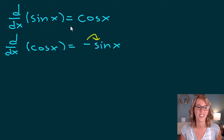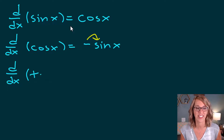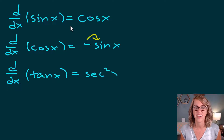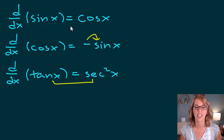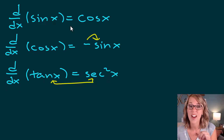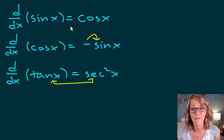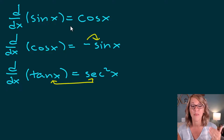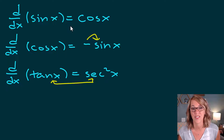Next, the derivative of tangent: d/dx of tangent x is equal to secant squared of x. I remember this because tangent and secant go together in the Pythagorean identity — that's how I have these memorized and grouped together. Hopefully that's helpful.